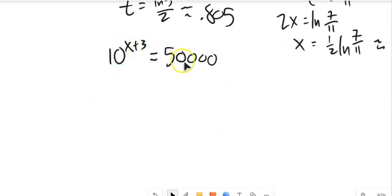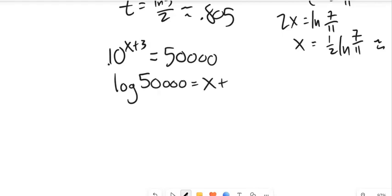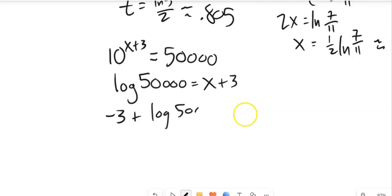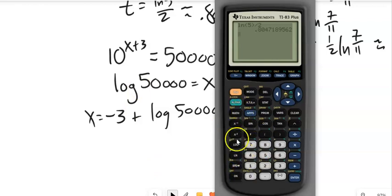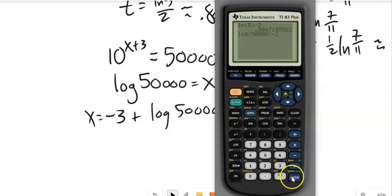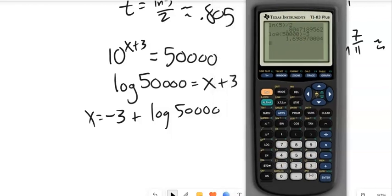This next one: 10 to some power equals 50,000. To undo 10 to that power, I use log base 10 — which is just log. Rewrite as log of 50,000 equals x plus 3. Log of 50,000 is just a number, so subtract 3. On the calculator I use the log button — not ln — log of 50,000 minus 3 gives about 1.69.